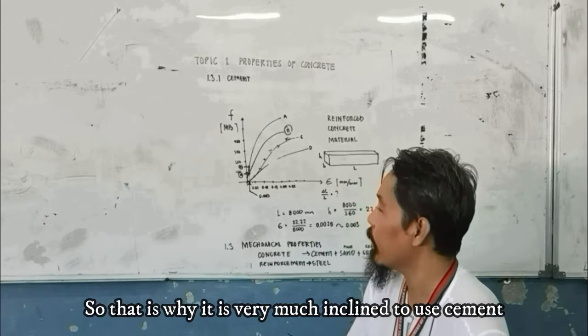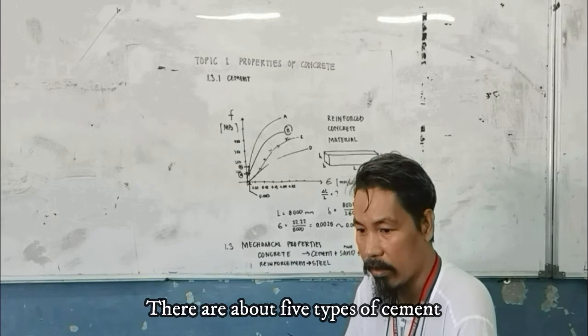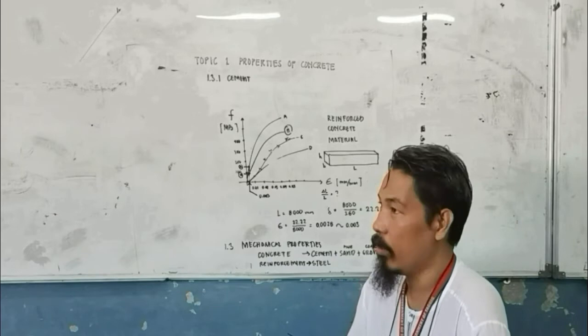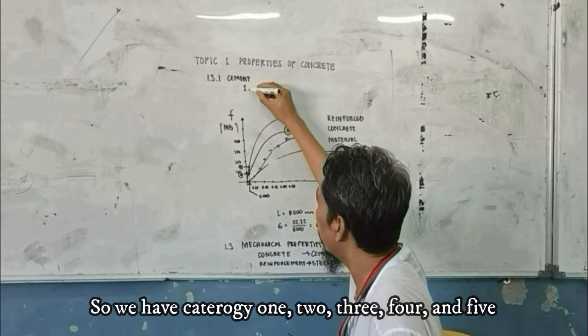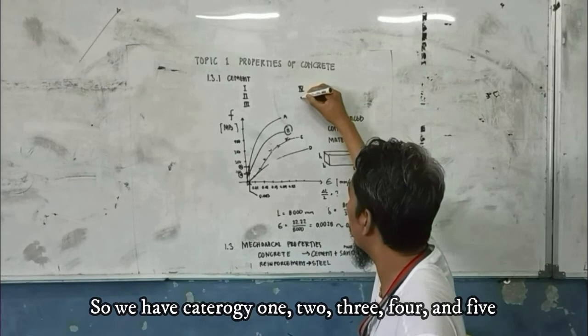And there are several types of cement. So in the industry, there are about 5 types of cement. So there are categories: 1, 2, 3, 4, 5, right?